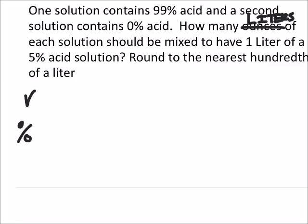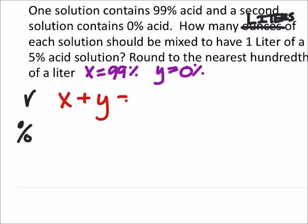In terms of volume, if I say that X is 99% acid solution and Y is 0% acid, then in terms of volume I've got X plus Y and that gives me 1 liter.